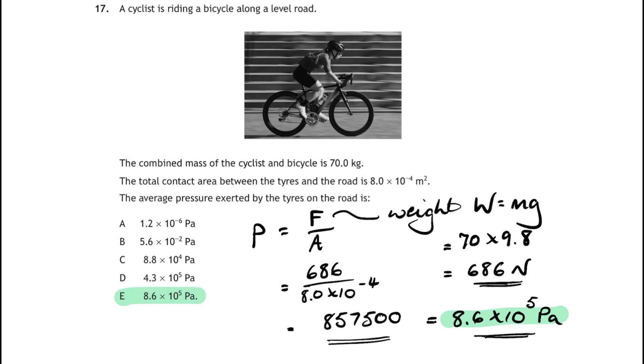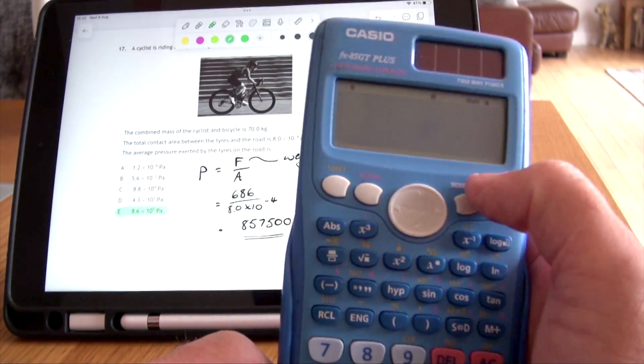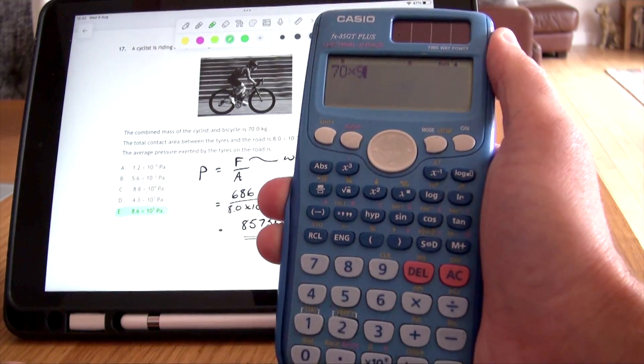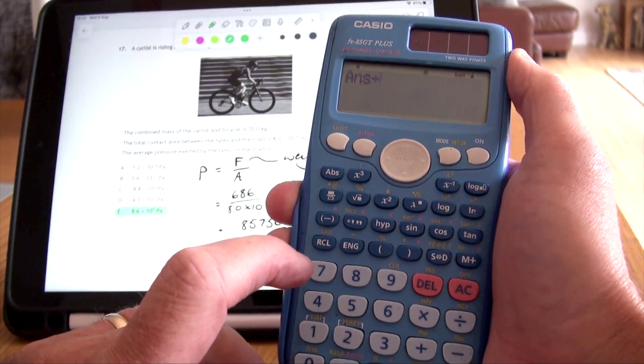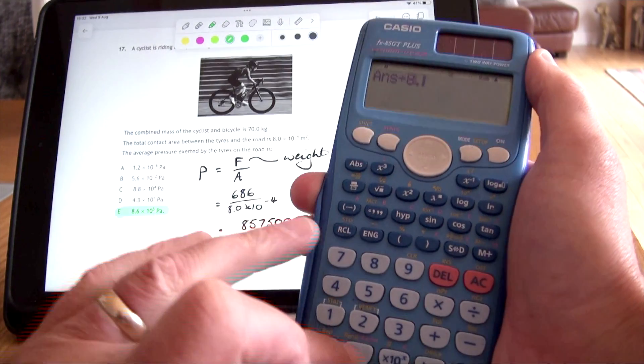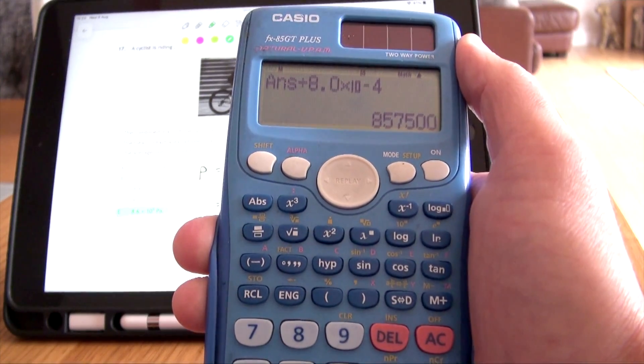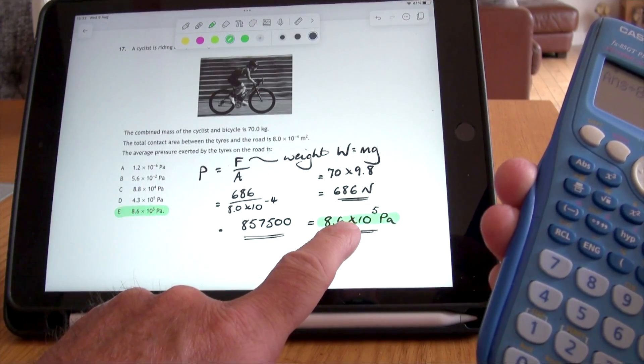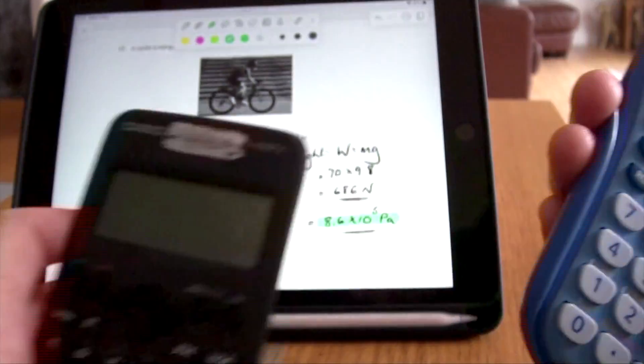Now, how do you arrive at that answer on a calculator? If I'm doing this on either of those old calculators, all I would have to do is turn it on. I do 70 times 9.8 equals, and there's my 686, that's the weight of the guy, divided by the contact area, which was 8.0 times 10 to the minus 4, and I get my answer of 857500. This gives me my correct answer of 8.6 times 10 to the 5, and that works when you use that calculator or that calculator.